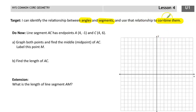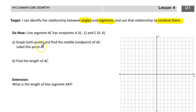Notice it says combine — either add or subtract is what we're talking about here. For the do-now, it gives us these two endpoints. It asks us to graph both points and find the midpoint of AC and label the point M, and then secondarily find the length of AC. Pause the video, try this one out by yourselves, and then come back and see if you got it right.